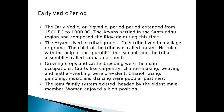The early Vedic age is also called the Rig Vedic age because the Rig Veda was composed at this time. The Rig Veda is a very valuable source of information on the early Vedic period. It is a collection of 1028 hymns and prayers in praise of the gods. Initially it was not in written form but was passed on orally. Knowledge passed on in this way is known as Shruti.